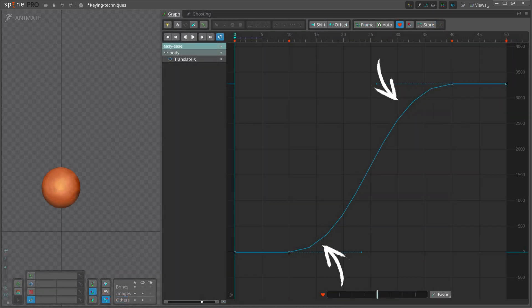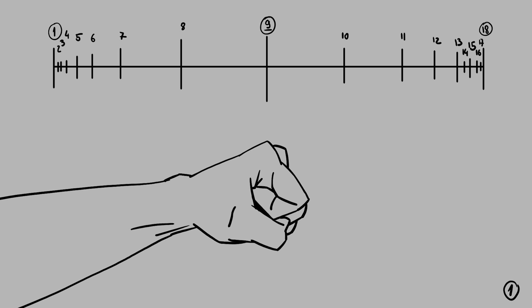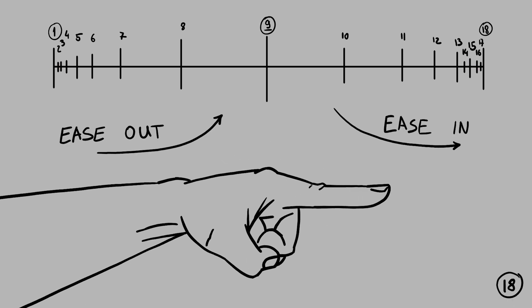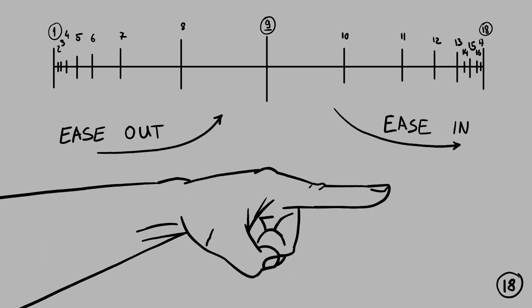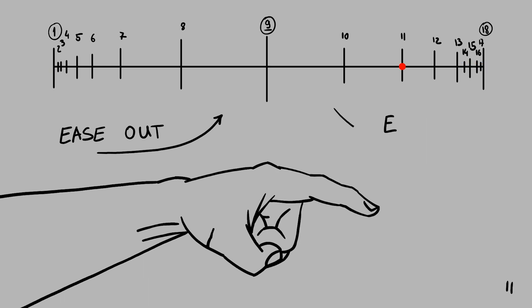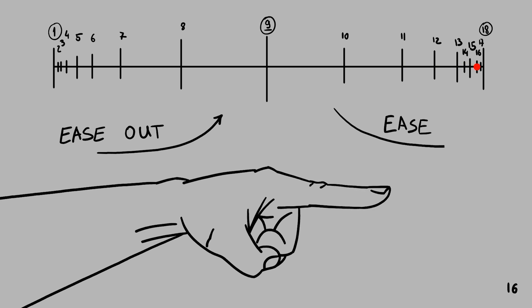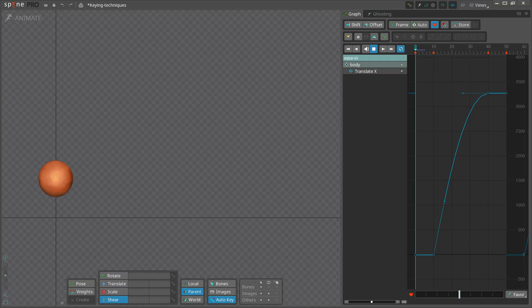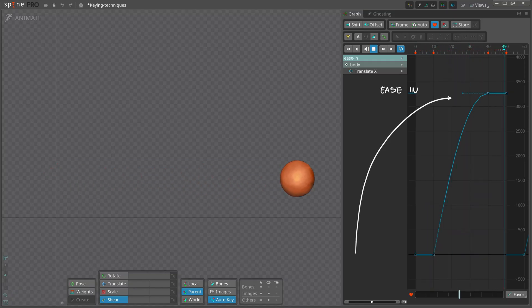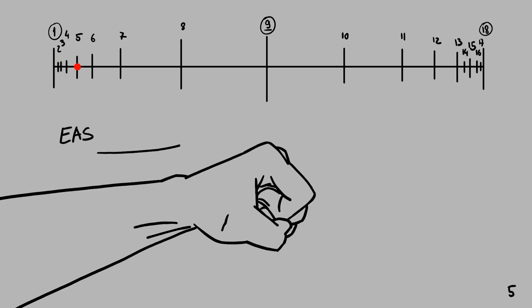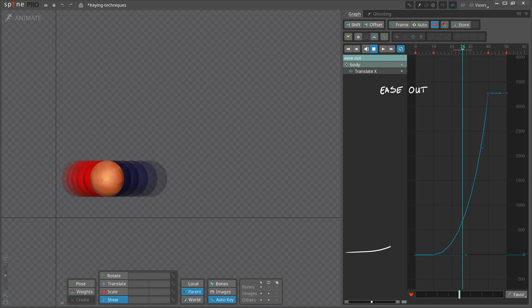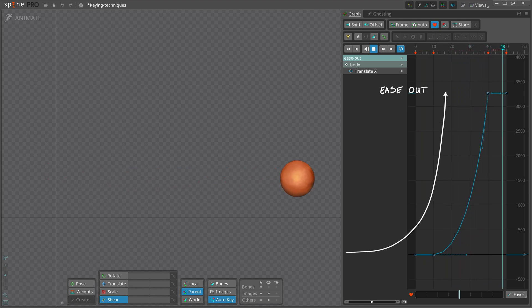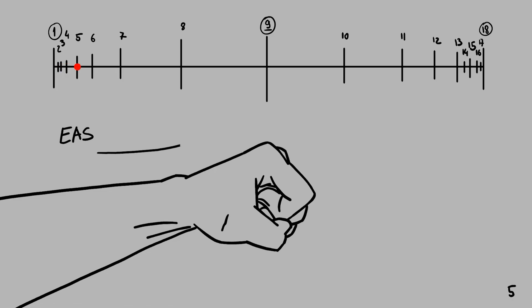Ease means the slow part of a transition. When animators say in or out, they're talking about going into or out of a pose or keyframe. To ease in to a pose, the transition slows just before the pose. To ease out of a pose, the transition slows just after the pose. This makes sense grammatically, once you think about it from the perspective of the pose.